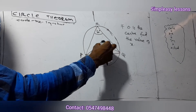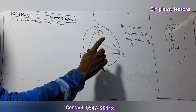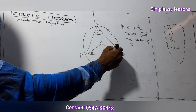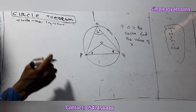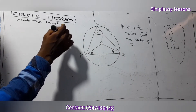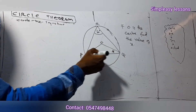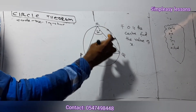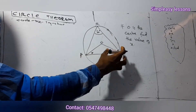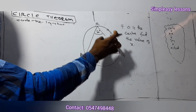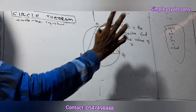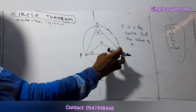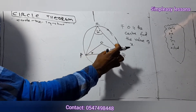The triangle going to the center is an isosceles triangle, so if one base angle is x, the other is also x. Now for the chord: the same chord PR goes to the center as angle POR, and the same chord goes to the circumference as angle PRQ. The one going to the center takes two times the one going to the circumference.